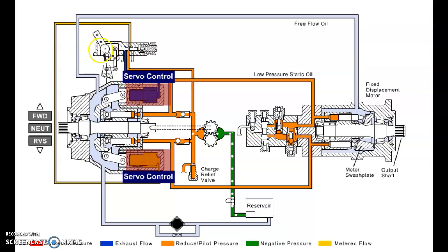What's happened here is the operator has moved the servo control into forward. That sends higher pressure to the bottom servo, draining the top servo or lowering the pressure in the top servo, creating a pressure imbalance at the swash plate. That's what's going to tip our swash plate over to give us control into forward and have the hydrostatic pump start pumping oil in the closed loop.